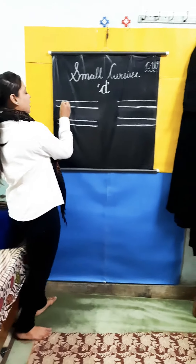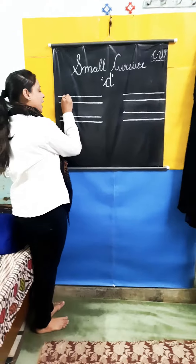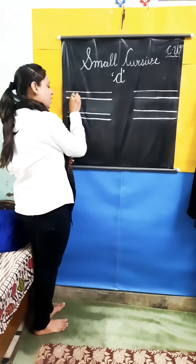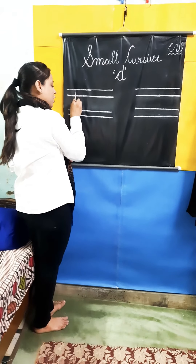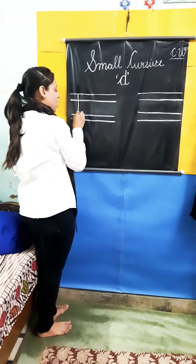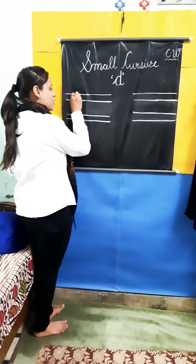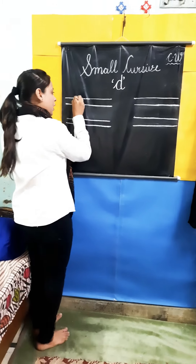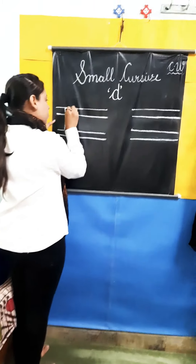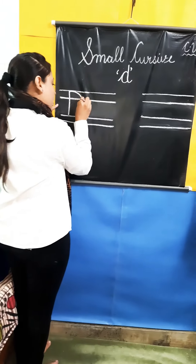So firstly we will make capital D. This is already you know how to make it. D — standing line and the curve.